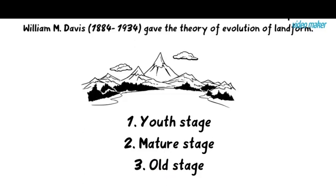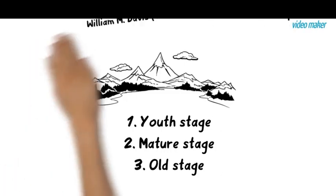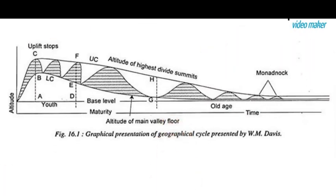The main stages are youth stage, mature stage, and old stage. This diagram shows the youth when hill slopes are steep, mature stage when the profile is smooth, and old stage when landforms are reduced to a gently undulating surface and peneplain.